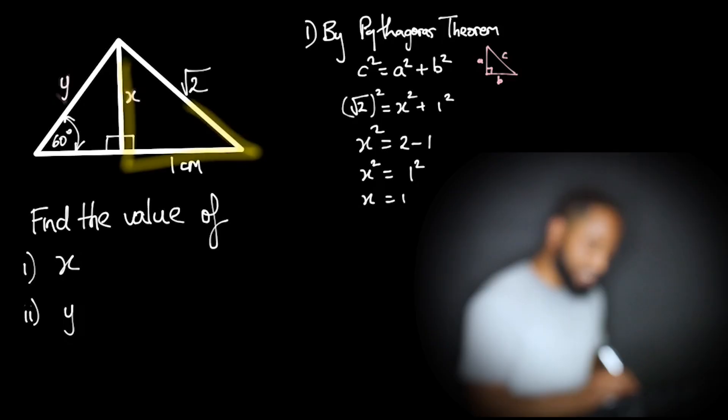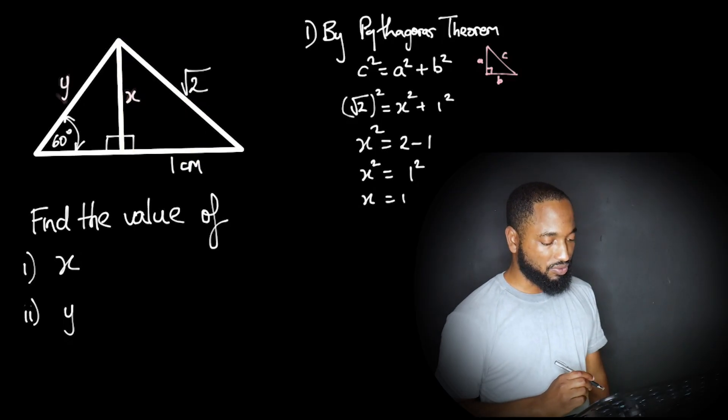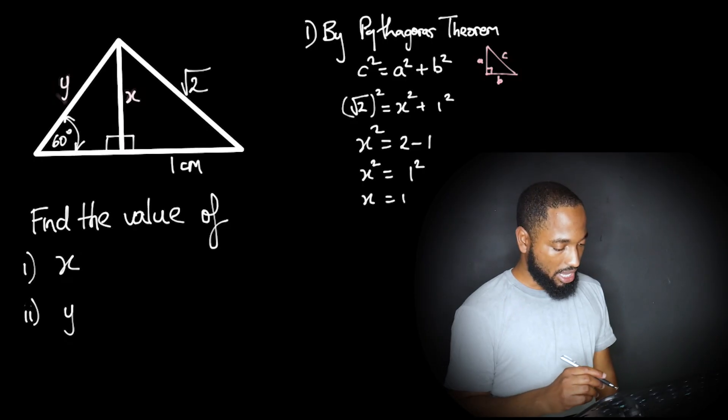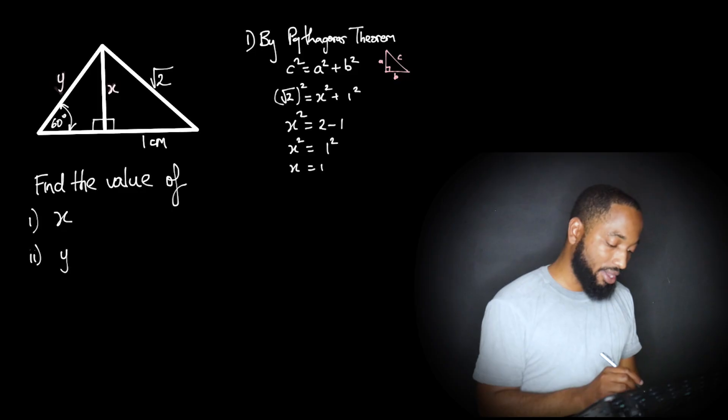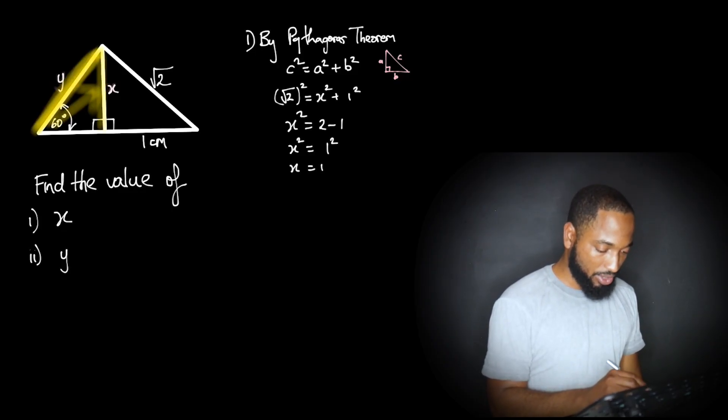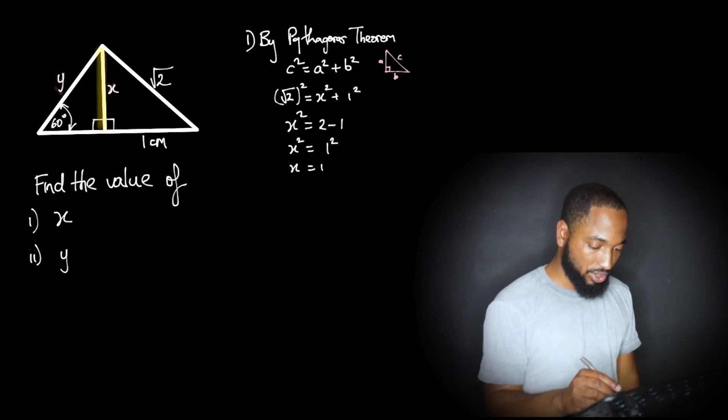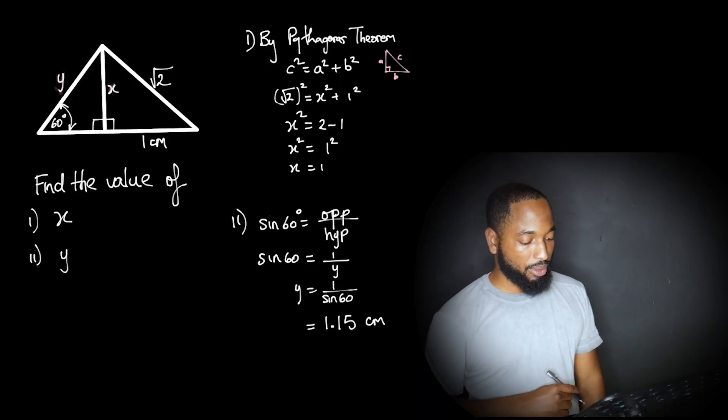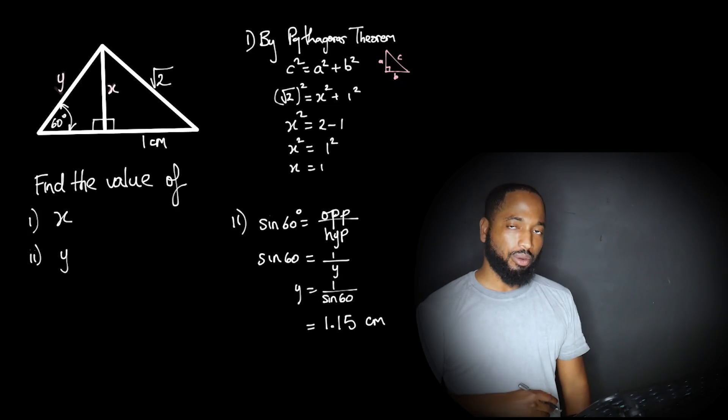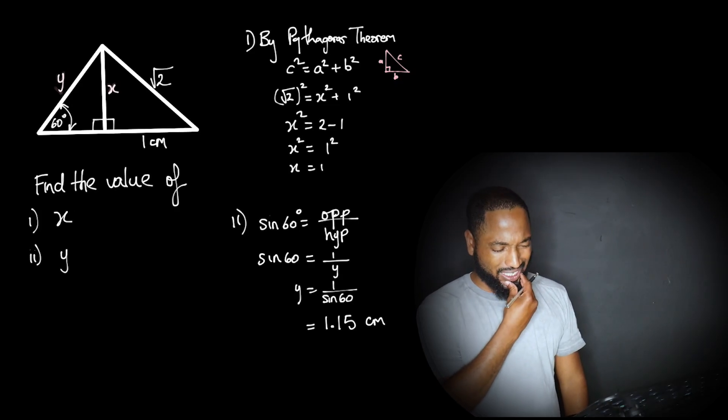And this is a common triangle that all additional math students should know about. We use this to prove what the sine and cosine of 45 is. Okay, so we have X. Now to find Y, Y is found by noticing that we have the opposite and we have the hypotenuse on this side. Opposite over hypotenuse, what ratio are we going to use? We're going to use sine. Sine 60 equals the opposite over hypotenuse. Work it out, then you get Y is about 1.15, or you should get something like 2 over the square root of 3 or something.